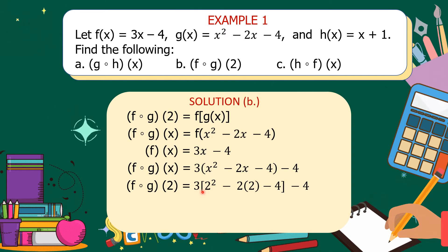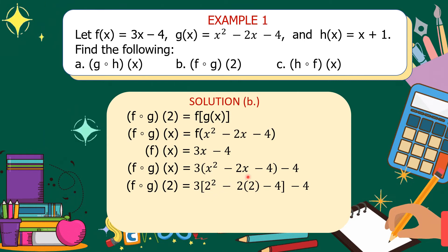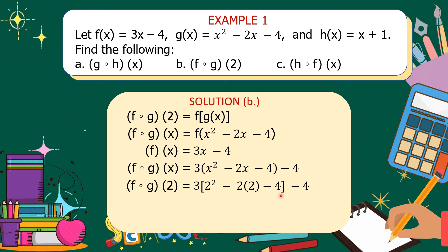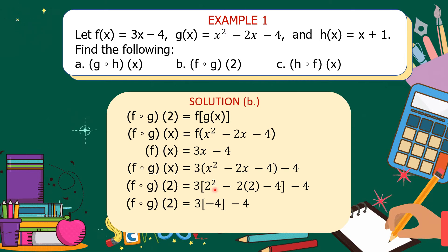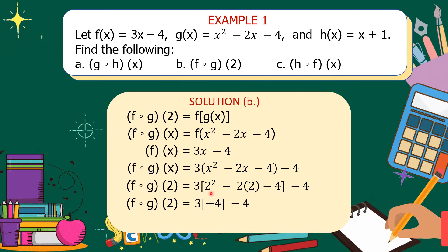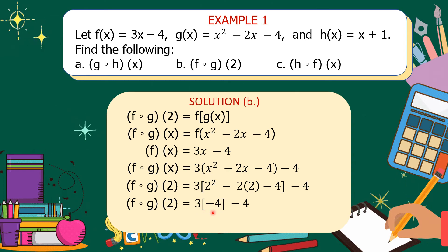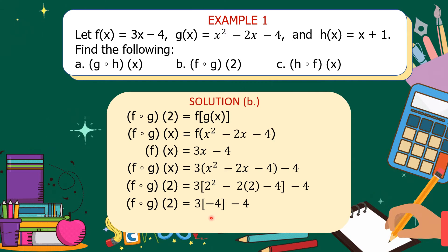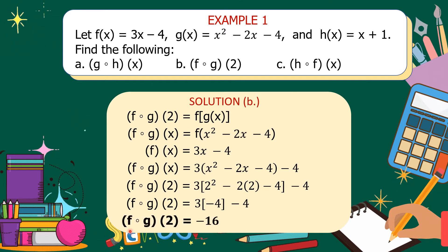So 3 times 2 squared minus 2 times 2 minus 4, then copy minus 4. Simplifying: 2 squared is 4, then minus 2 times 2 is 4, so 4 minus 4 equals 0. Copy minus 4. So 3 times 0 minus 4... wait: 3 times negative 4 is negative 12, then minus 4 is negative 16. So f circle g of 2 is equal to negative 16.